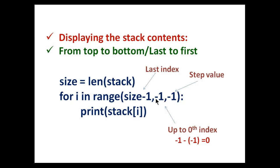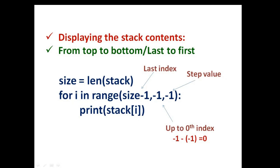About the end value, that is minus one — we want to display up to the zeroth index, so minus one. Minus of minus one is equal to zero, or we can say we want to move up to zeroth index — zero minus one is minus one. Getting confused? Don't worry, I will show you some examples.